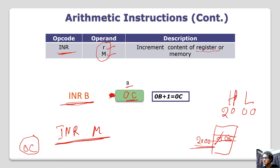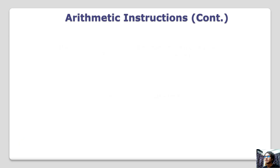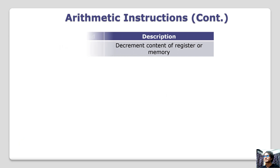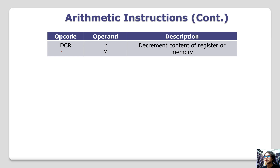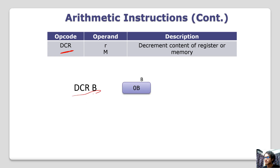This is DCR — decrement content of memory and registers. This is the rule to decrement. DCRB is the instruction. The input value was 0B. After decrement, 0A is the result.